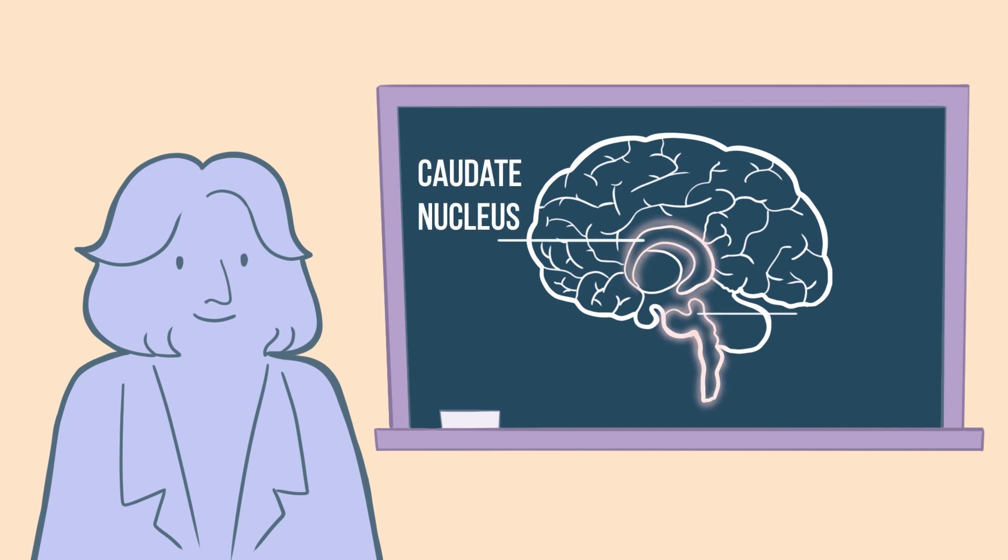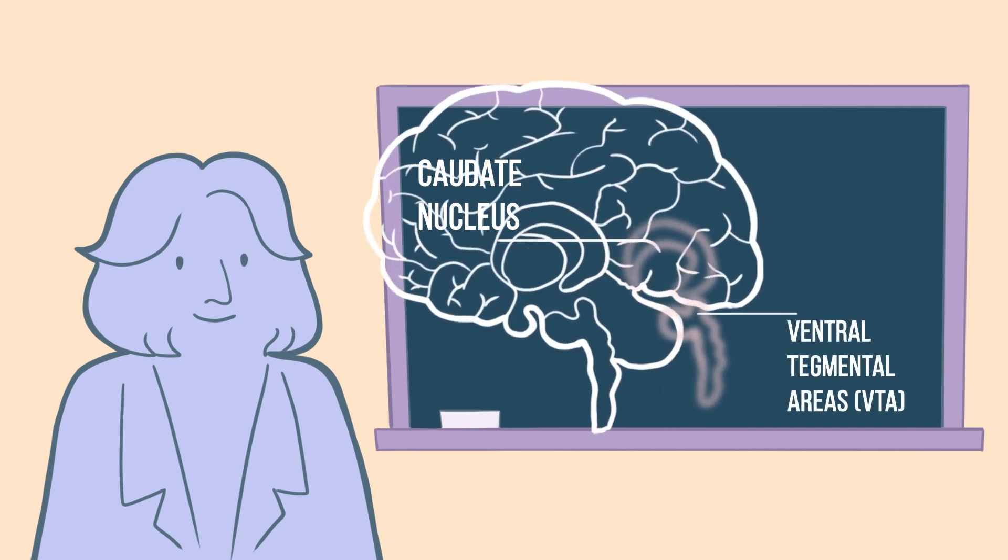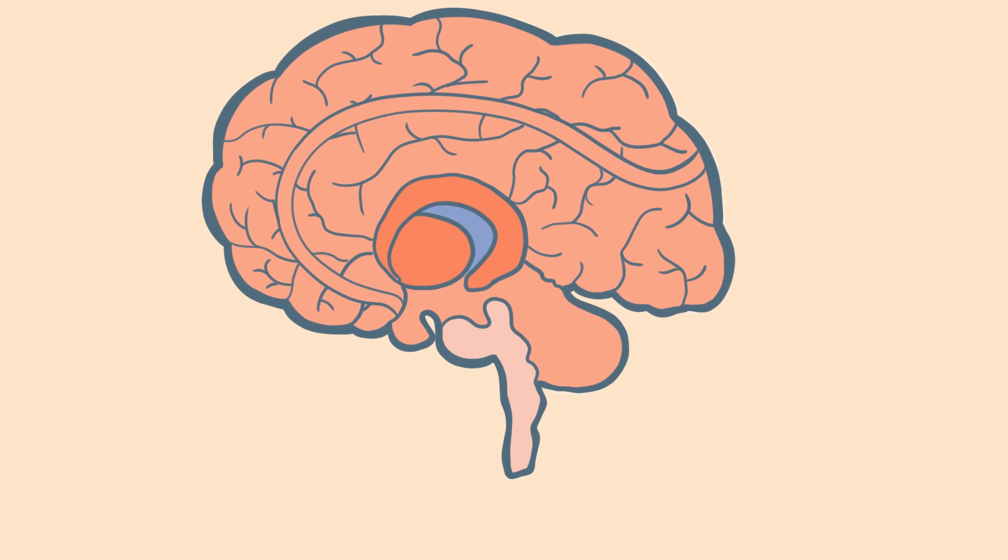These regions were the caudate nucleus and the ventral tegmental areas, VTA. Both areas are rich in dopamine, the feel-good hormone. Dopamine is associated with feelings of pleasure and reward.